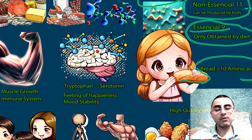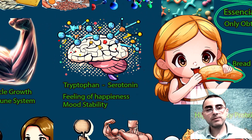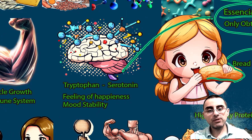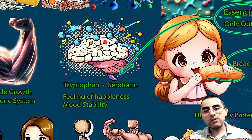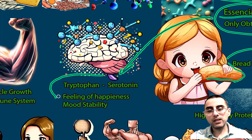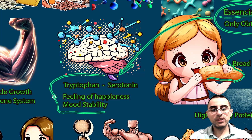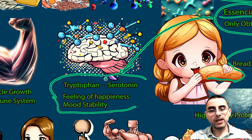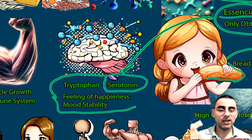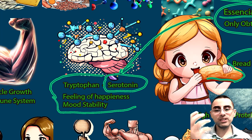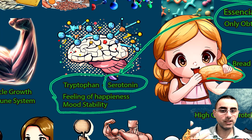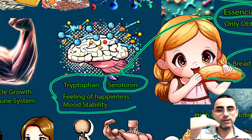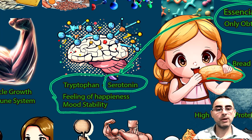Let's look at why essential amino acids are important. For example, tryptophan is an essential amino acid and it is a precursor to serotonin. Serotonin is a crucial neurotransmitter in our brain — it is responsible for mood stability and our sense of well-being.